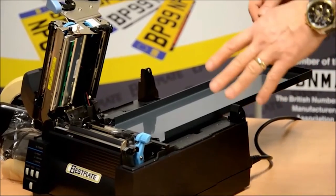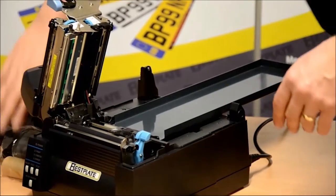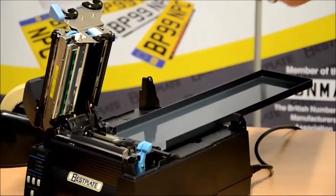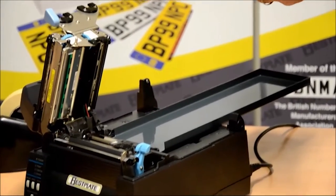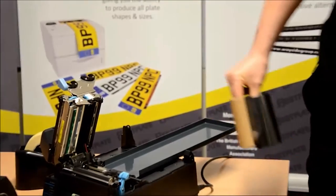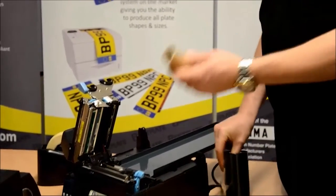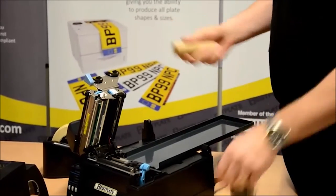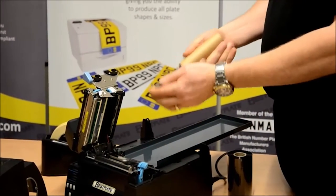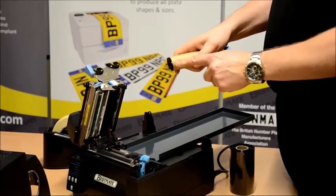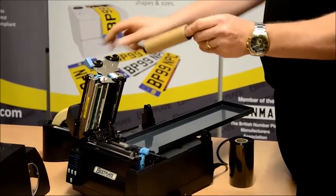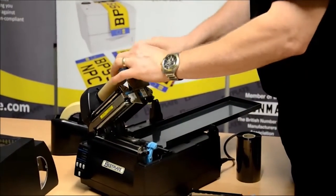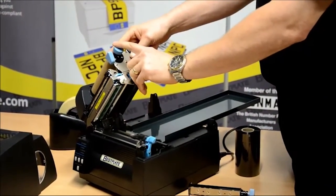Now the printer is all clean, we can put the new ribbon on. Take your new ribbon, take the cardboard core and one of the mandrels, and push the mandrel through the cardboard core to the stop. Place that on the front of the printer and clip it down into place.